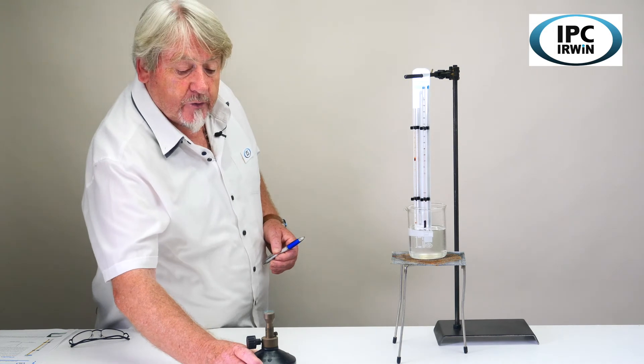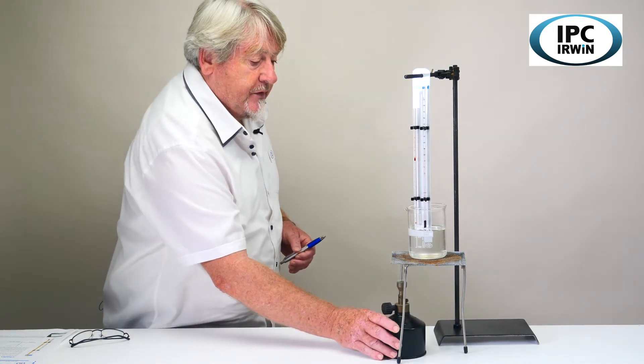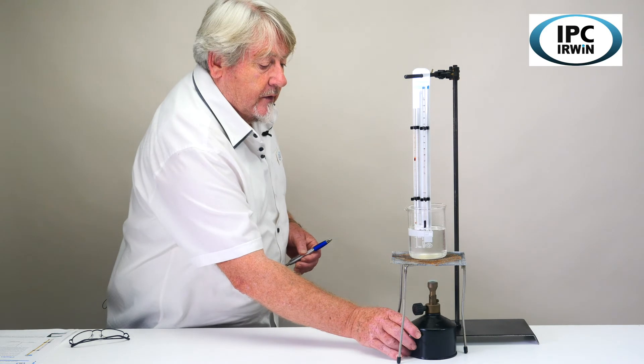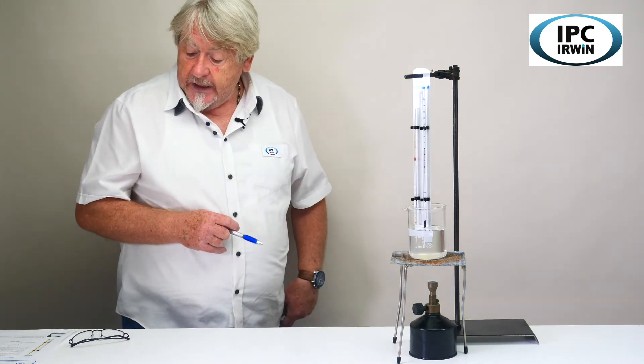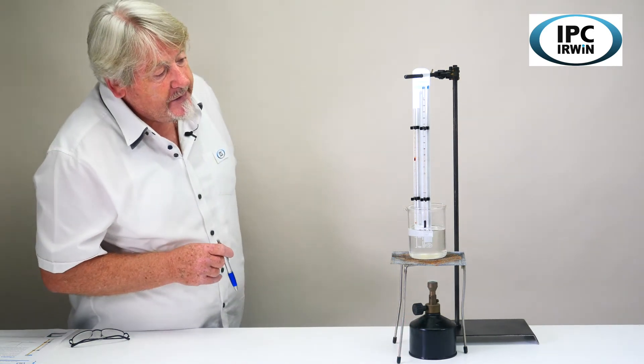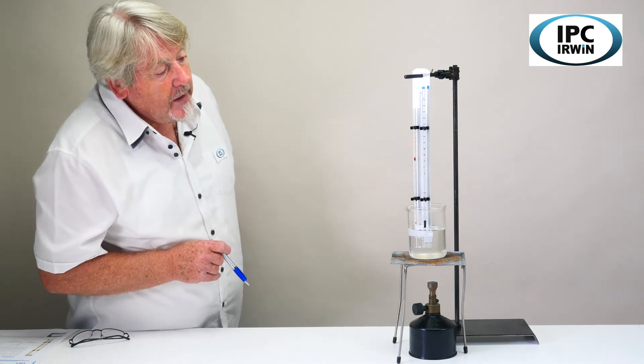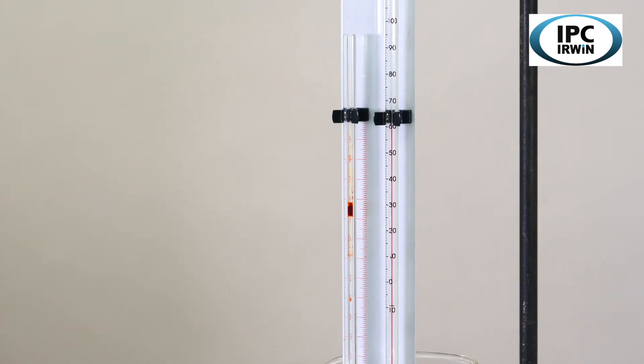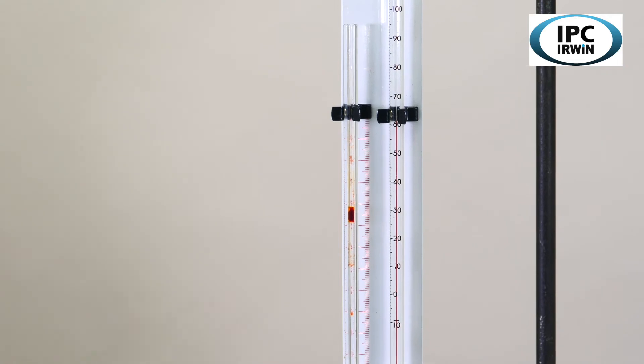I'm now going to apply heat with the Bunsen burner. We'll see the temperature increase on the thermometer and we should see the position of the bead moving.